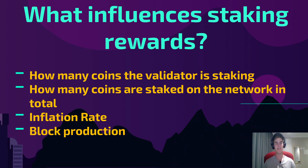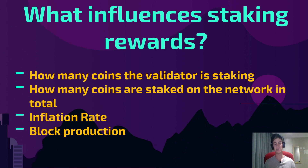Thirdly, the inflation rate. Think of it as an emission of coins every year. In crypto, inflation effectively means the increase in the supply of the token every year at a fixed rate, and the increasing supply is used to pay for the distribution of staking rewards. Lastly, block production — a validator will produce a certain amount of blocks and get rewarded accordingly. You can look at all of these things before staking into a specific coin to determine whether it's a good validator or a good coin to stake.